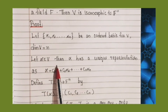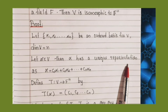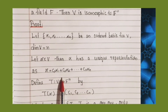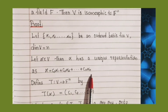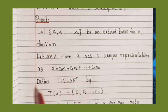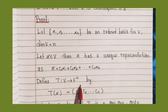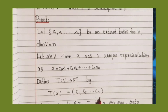Let α belong to V. Then α has a unique representation: α = c₁α₁ + c₂α₂ + ... + cₙαₙ. We define a linear transformation T from V to Fⁿ by T(α) = (c₁, c₂, ..., cₙ).